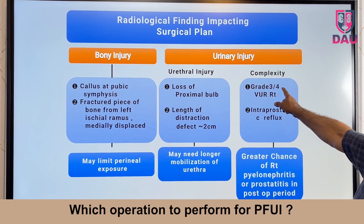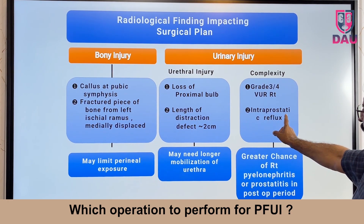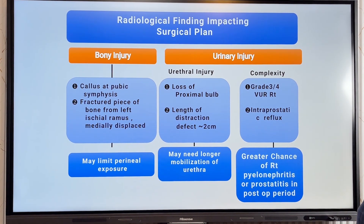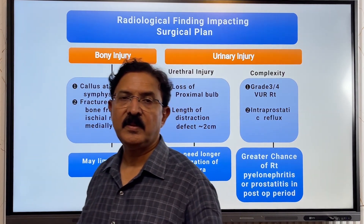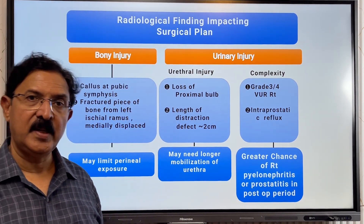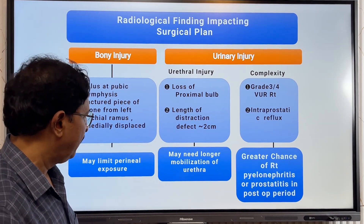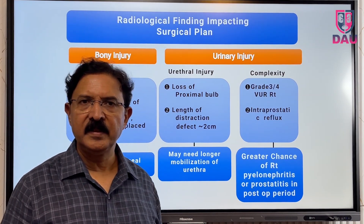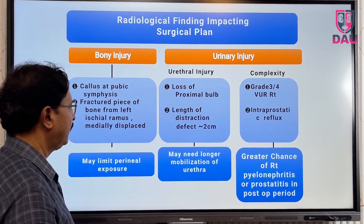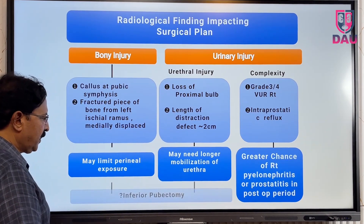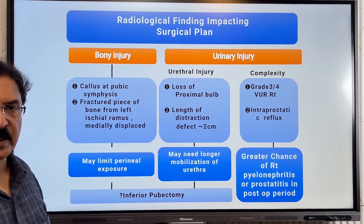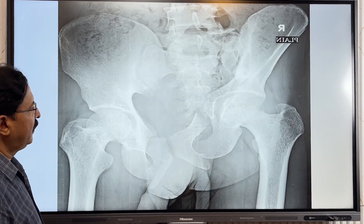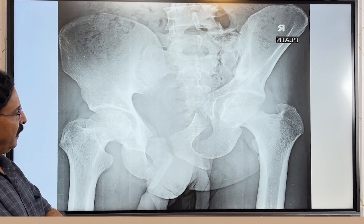Summary for Case 3: the loss of proximal bulb and length of distraction defect is more than 2 centimeters, requiring longer urethral mobilization. The displaced ischial fragment may limit perineal exposure — be ready to excise callus. The right-sided grade 3-4 reflux and intra-prostatic reflux give a greater chance of developing post-operative pyelonephritis or prostatitis — be careful. Given the defect length greater than 2 centimeters, this patient will probably need some form of inferior pubectomy to bridge the gap.